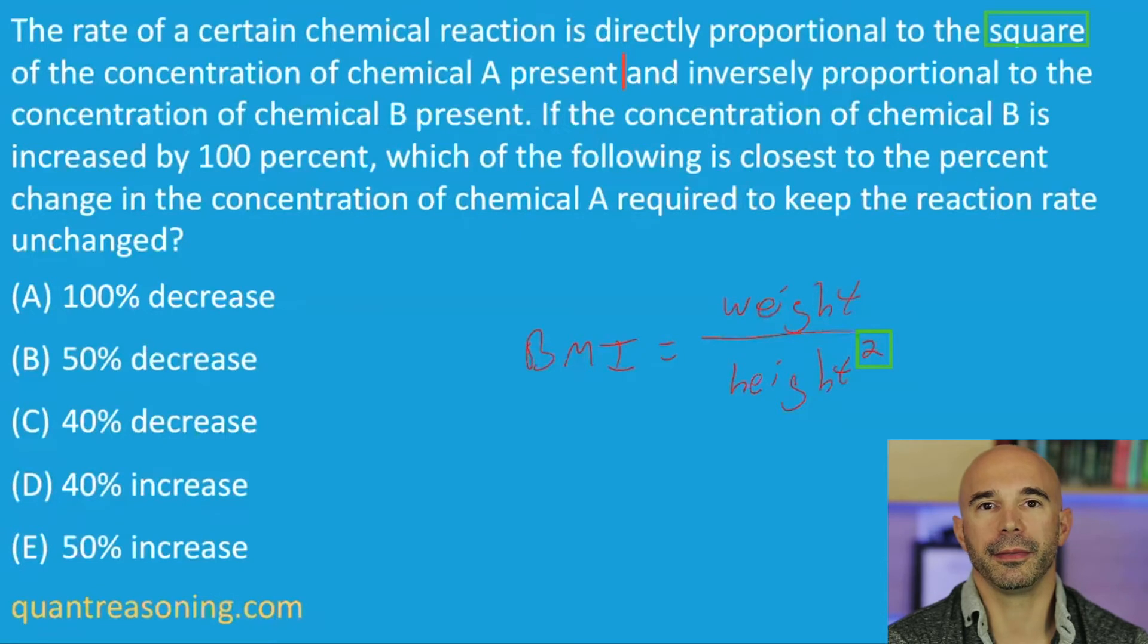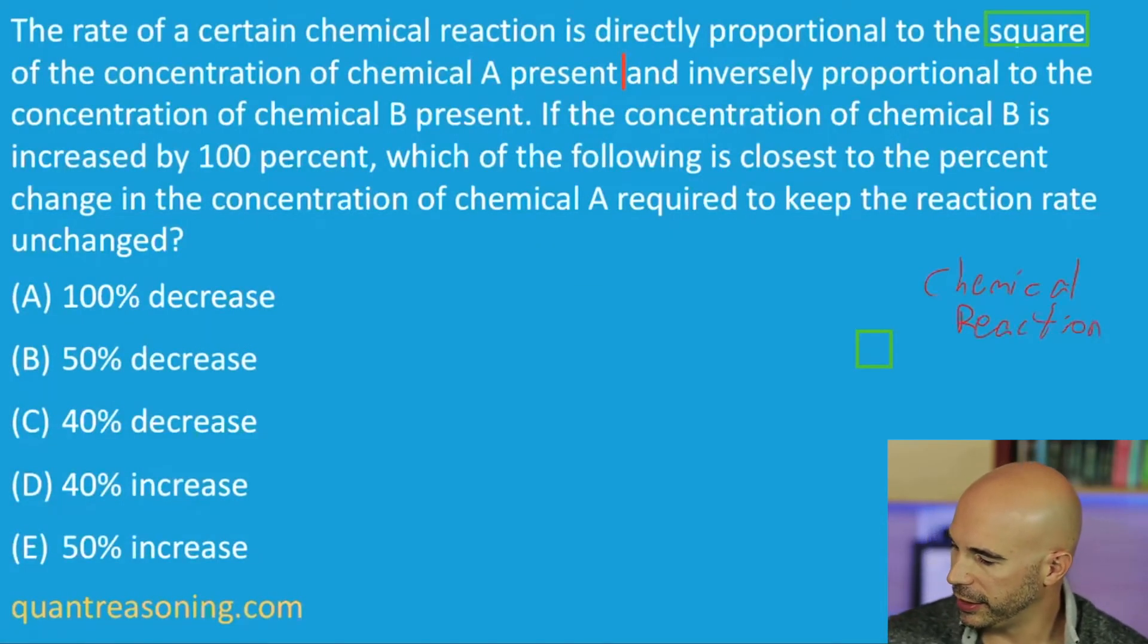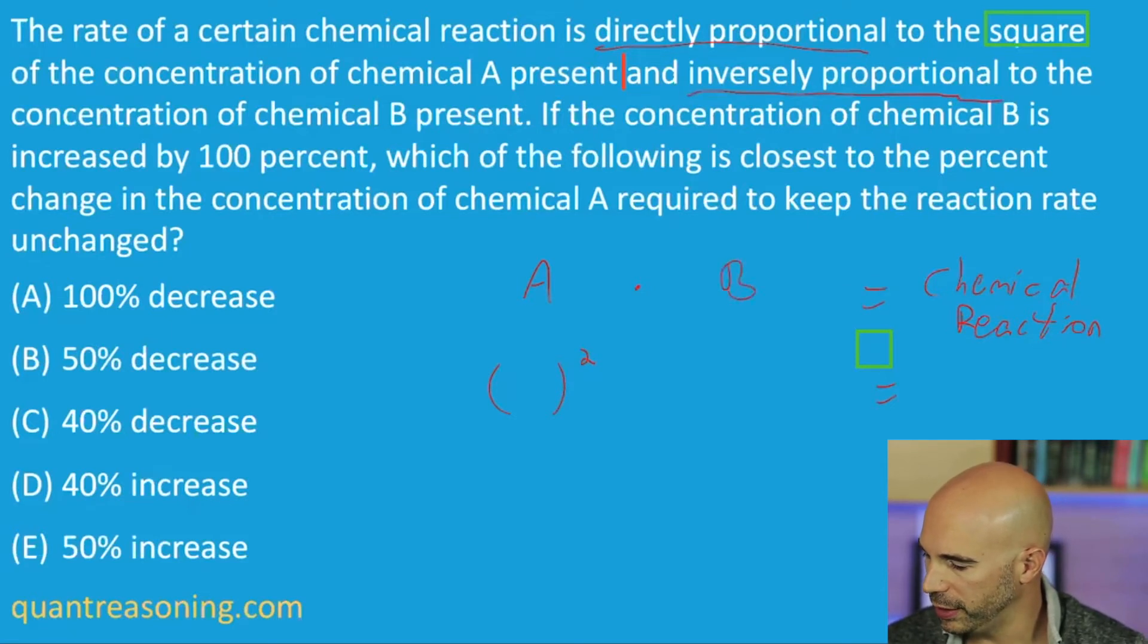And we have, from the chapter on multiplicative stories, we have a kind of a format, right? A table that we can fill in for such circumstances. Chemical reaction, and what do we know, that it's directly proportional to the square of chemical A. So let's just call it A. So whatever that is gets squared. And it's inversely proportional to the concentration of chemical B. So for B, I'm going to have to take the reciprocal of whatever the change factor is. And that's going to give me the change factor for the chemical reaction. So these are just change factors.